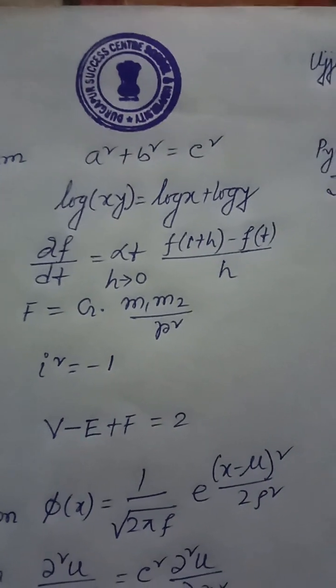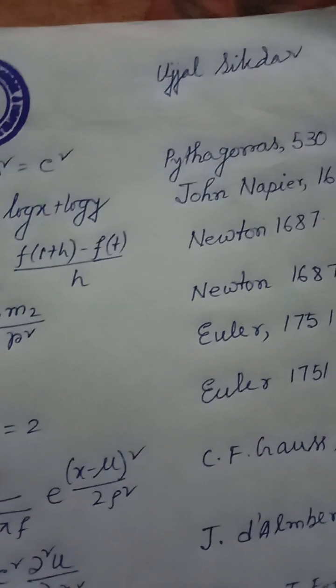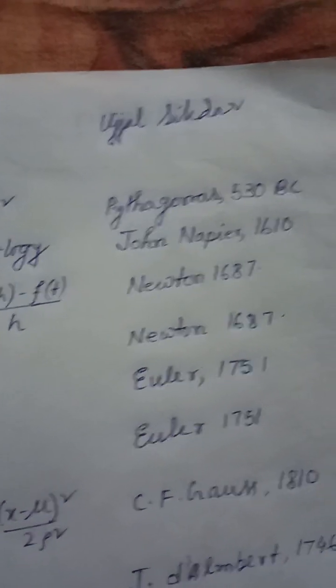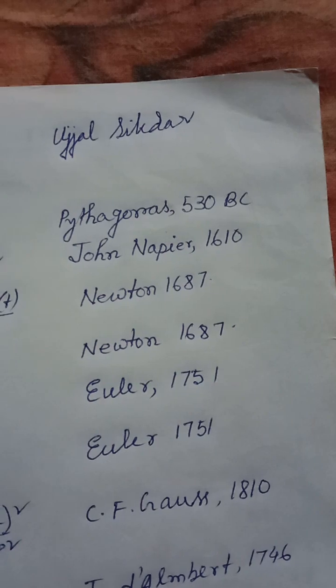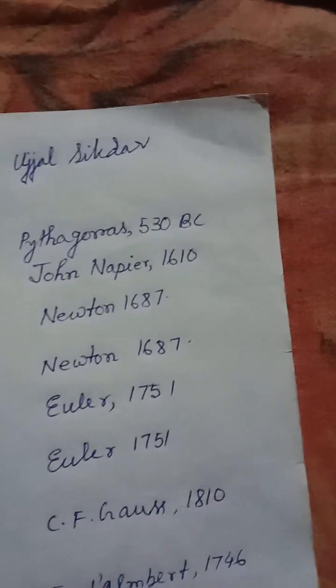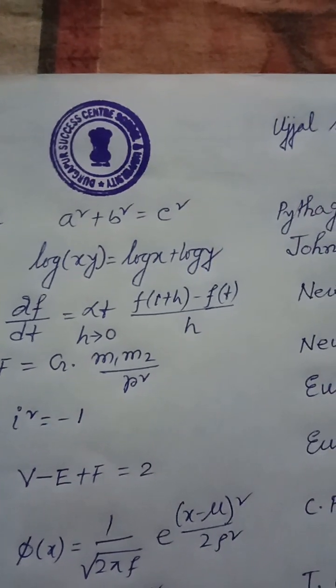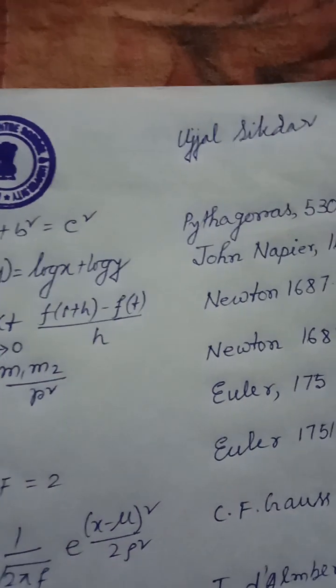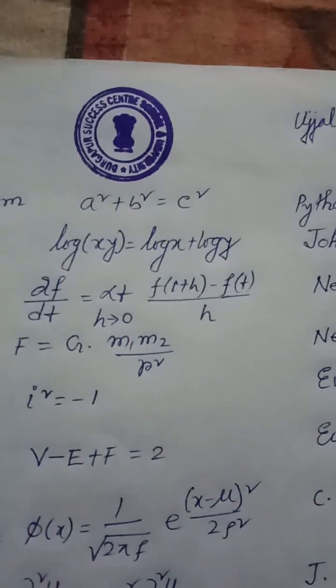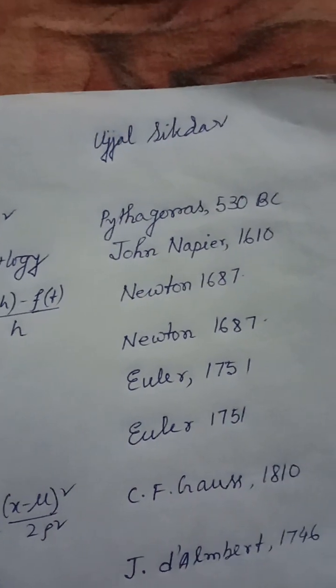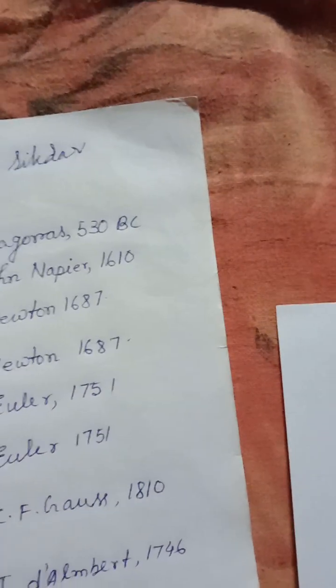John Napier, 1610. Equation 3 — Calculus equation: df/dt = limit h→0 [f(t+h) − f(t)] / h. Newton, 1687. Equation 4 — Law of Gravity: F = G·m₁·m₂ / r². Newton, 1687.